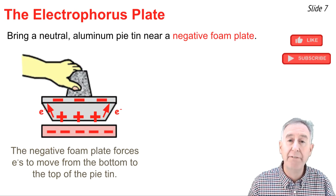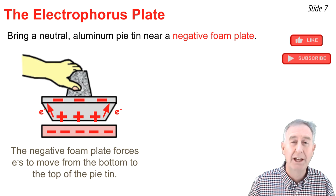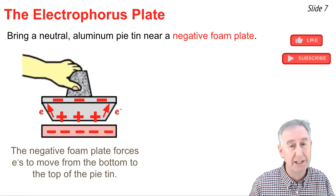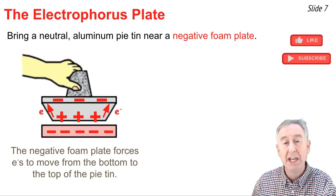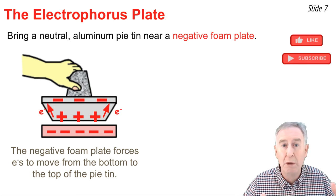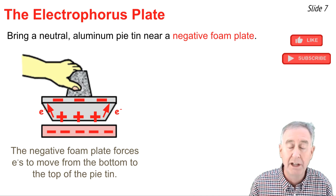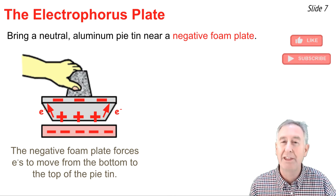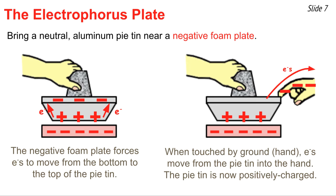A common lab in physics class is the electrophorous lab, in which you charge an aluminum pi-tin by induction. We bring a neutral aluminum conducting pi-tin near a negatively charged foam plate. The negative charge on the foam plate forces electrons in the pi-tin to be repelled from the bottom up to the top, polarizing the pi-tin — that's step one, the polarization step. In the charging step, a hand touches the pi-tin and electrons leave the pi-tin and travel into the hand, still repelled by the nearby negative foam plate. Because the aluminum pi-tin has lost electrons, it becomes charged positively.